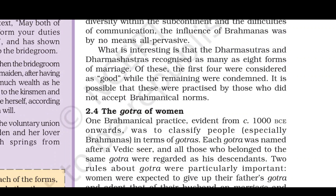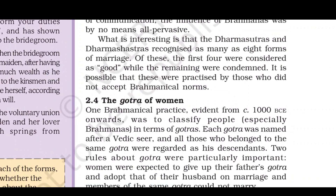What is interesting is that the Dharmasutras and Dharmashastra recognized as many as eight forms of marriage. Of these, the first four were considered good, and the remaining were condemned. It is possible that the last four were practiced by those who did not accept Brahmanical norms.